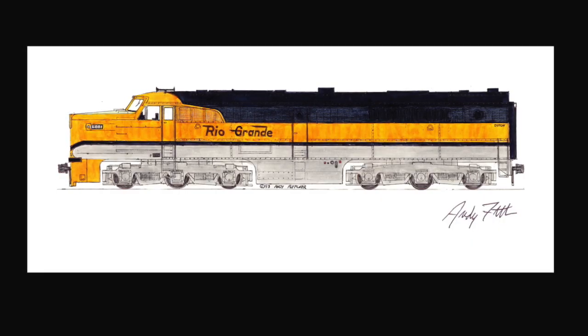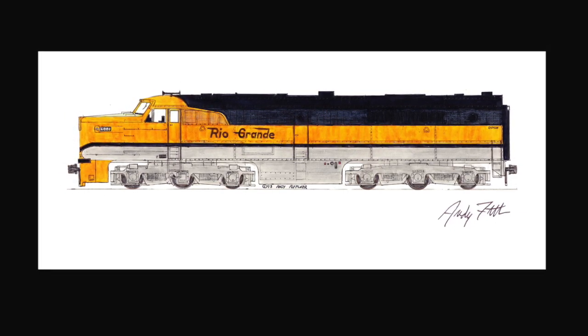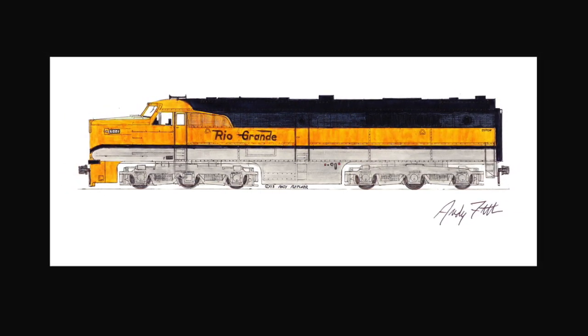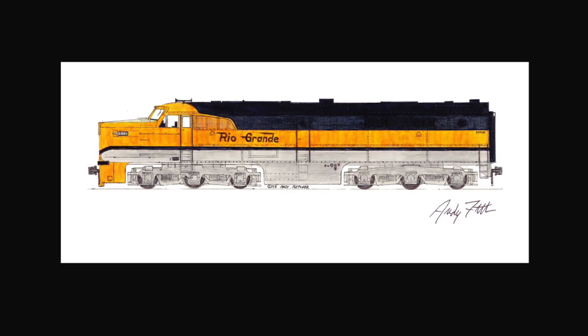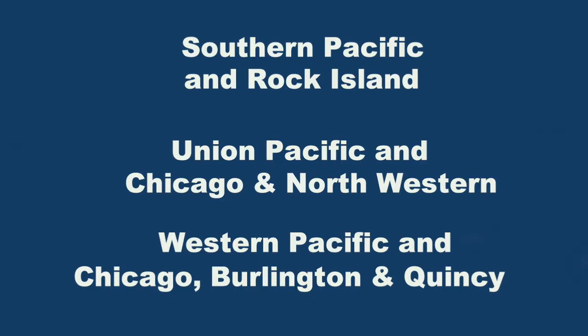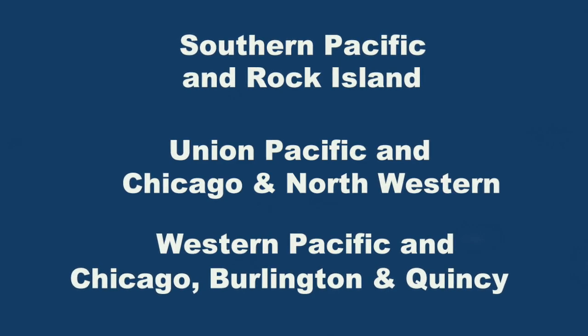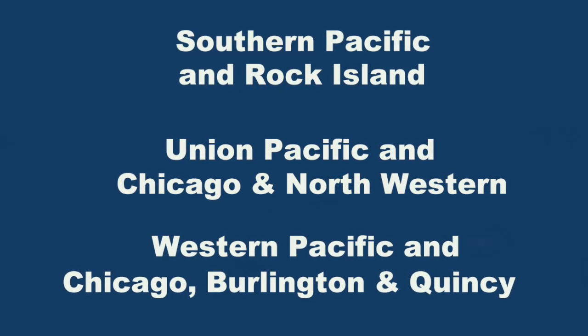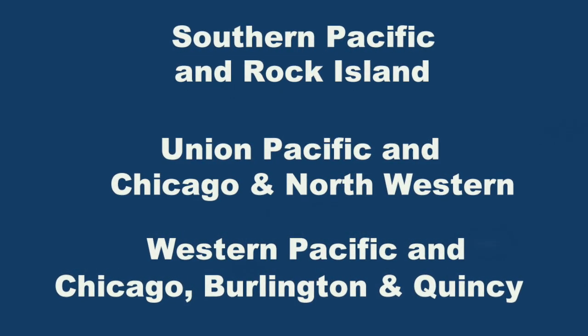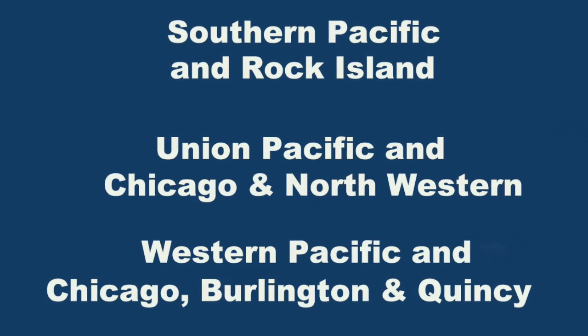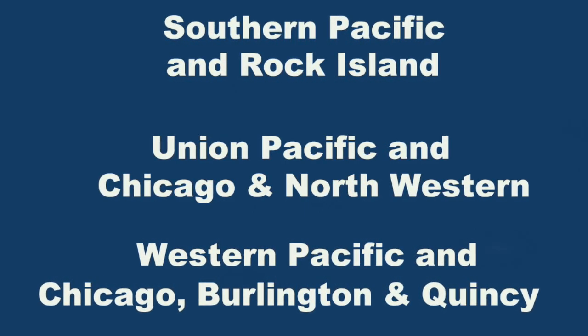For our first question, the Rio Grande ran the original California Zephyr with what two other railroads? A. Southern Pacific and Rock Island. B. Union Pacific and Chicago and Northwestern. Or C. Western Pacific and Chicago, Burlington, and Quincy.